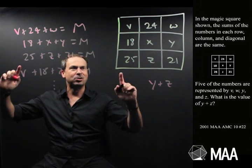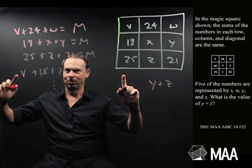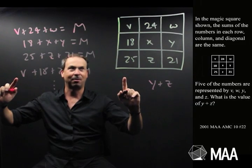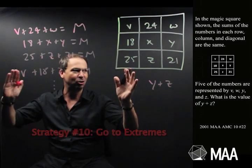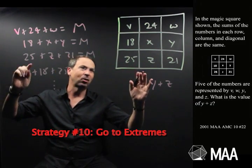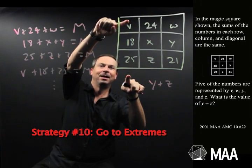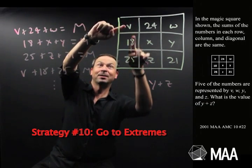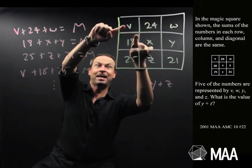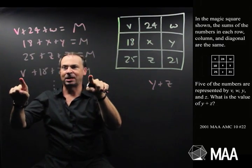Well, I can't help but notice that some rows and some columns are better than others. So I'm going to go to extremes, Strategy number 10. Like, if I look at this particular column here, it's kind of extreme because it's only got one variable in it. V and the rest is numbers. In fact, here's this equation here.